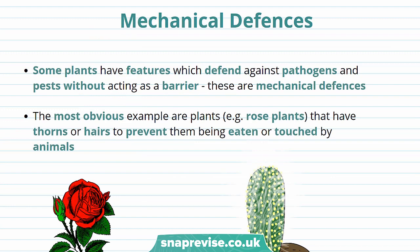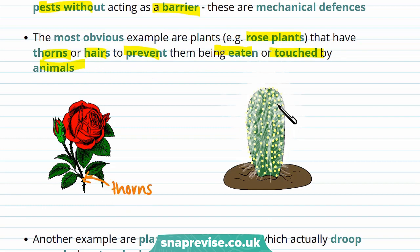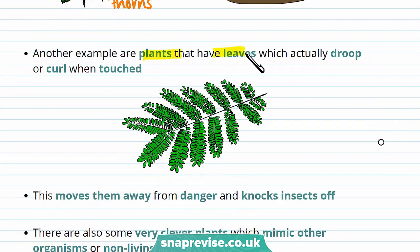Some plants also have mechanical defences — features which defend against pathogens and pests without acting as a barrier. For example, rose plants have thorns or hairs that prevent them from being eaten or touched by animals, and these thorns might damage the insects or animals. Cacti also have spikes, which prevents them from being eaten. Another example of a mechanical defence is plants that have leaves which droop or curl when touched, knocking insects off and helping them move away.